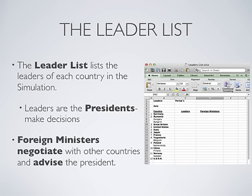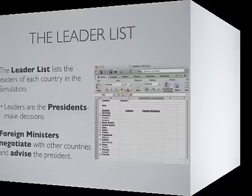The leader list lets everyone know who the leaders are of each country and in some cases who the foreign minister is. The president is in charge of the country and the foreign minister is in charge of negotiating with other countries and advising the president.